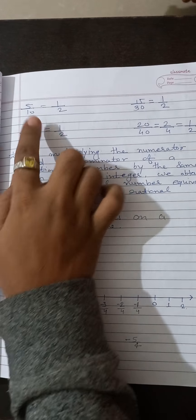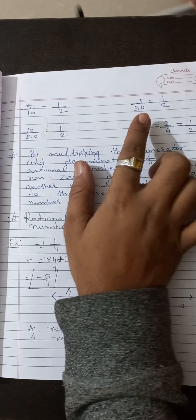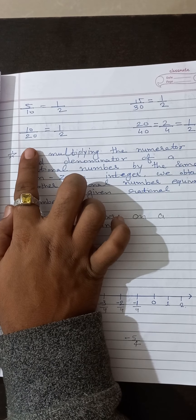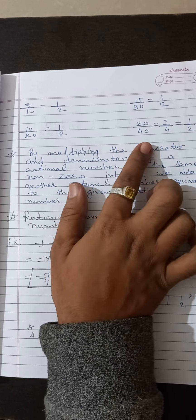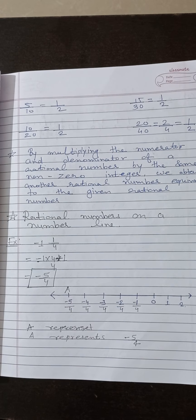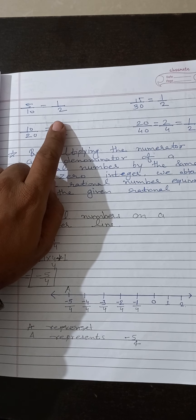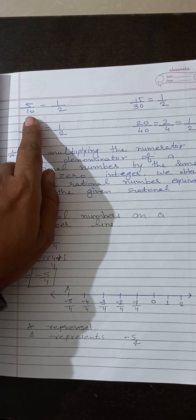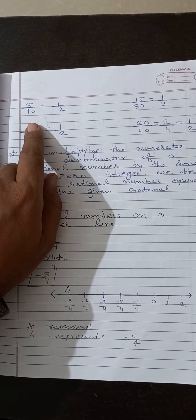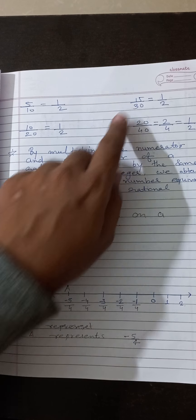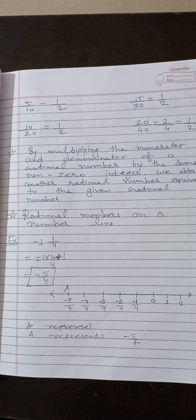Take 5 upon 10, 15 by 30, 10 by 20, and 20 by 40. To simplify: 5 upon 10 — divide both by 5, you get 1 by 2. For 15 by 30 — divide both by 15, you get 1 by 2. Again, this is 1 by 2.